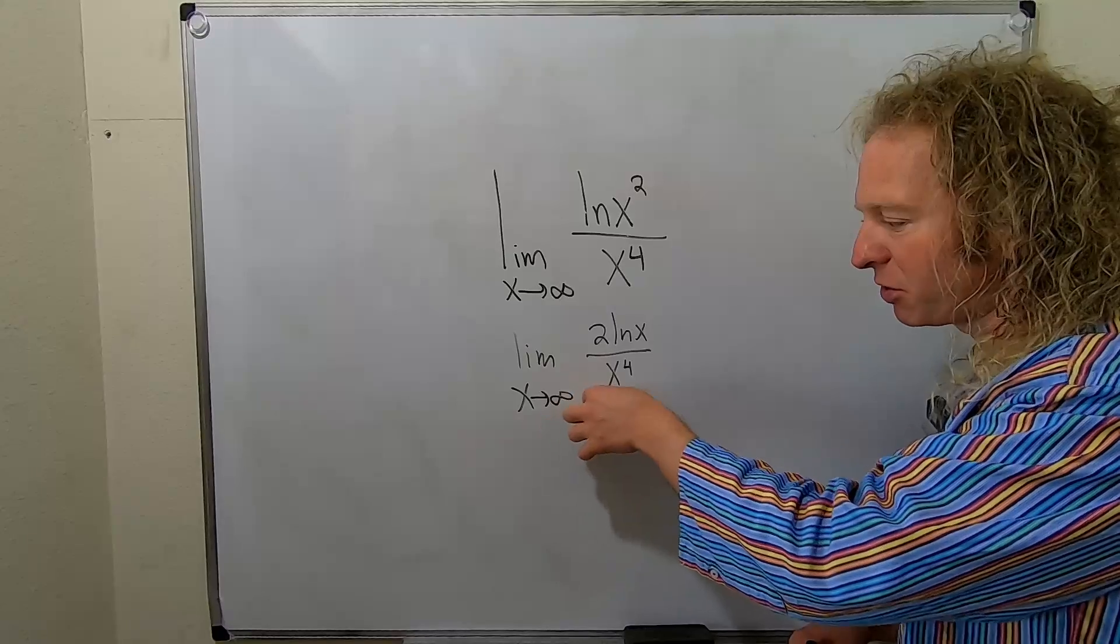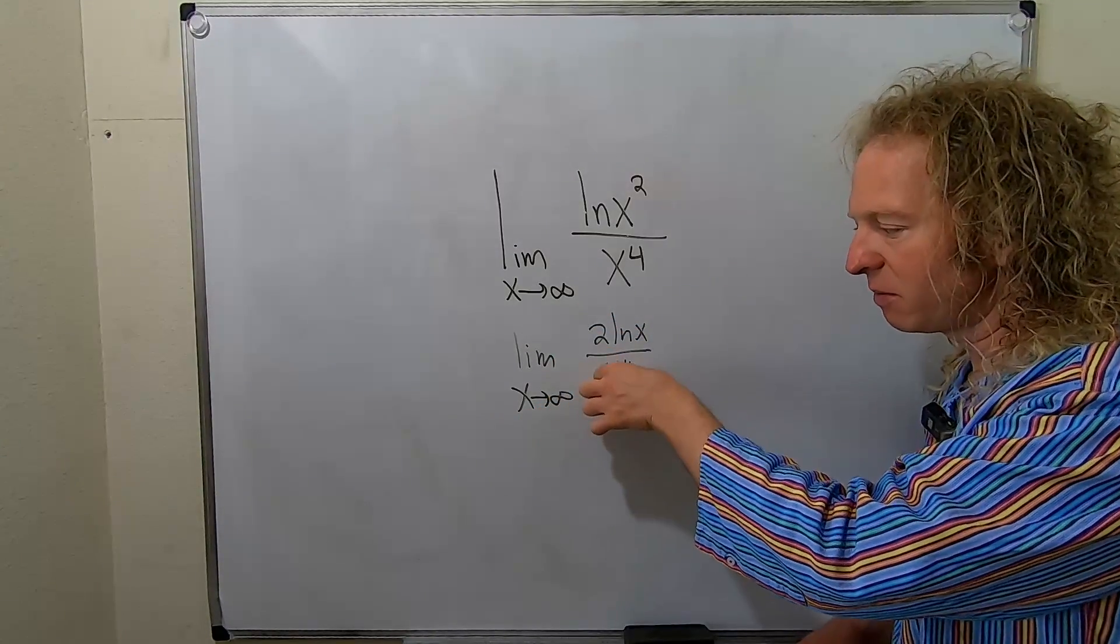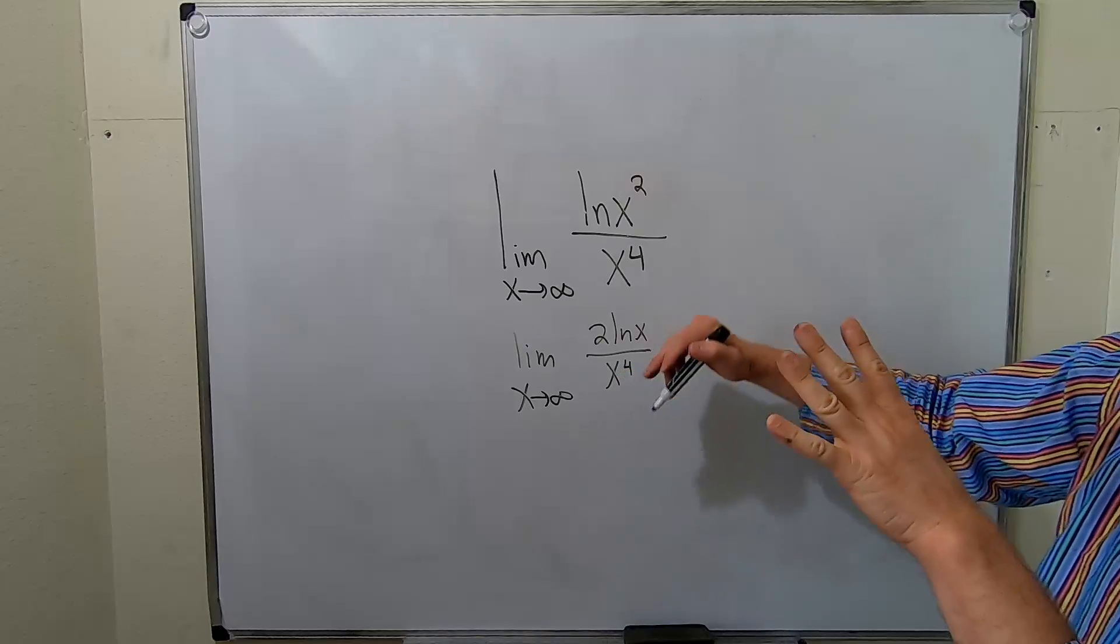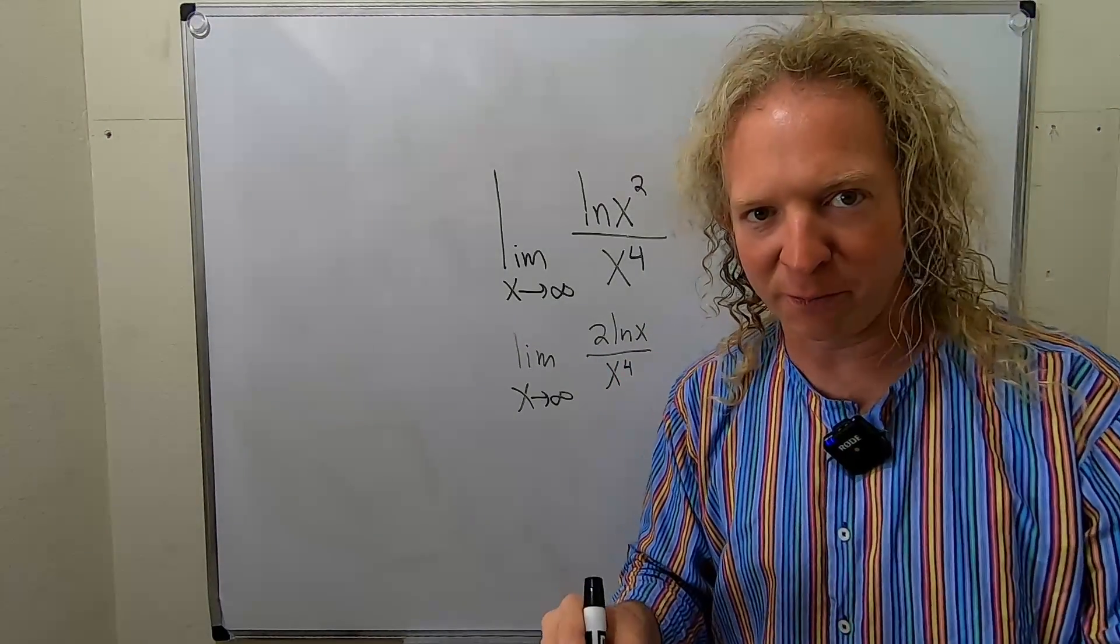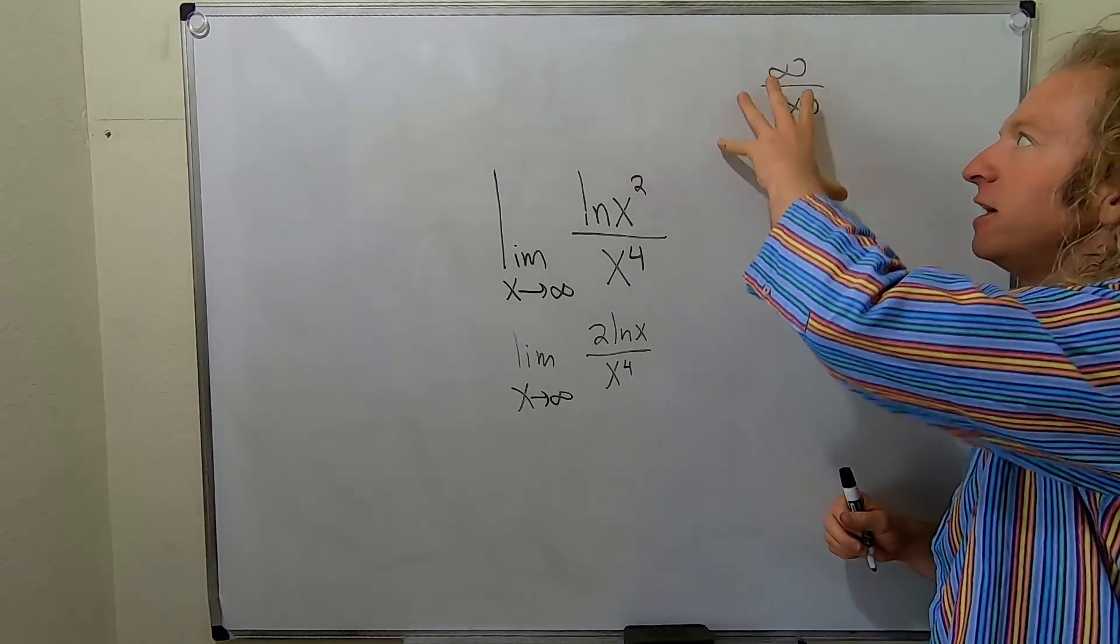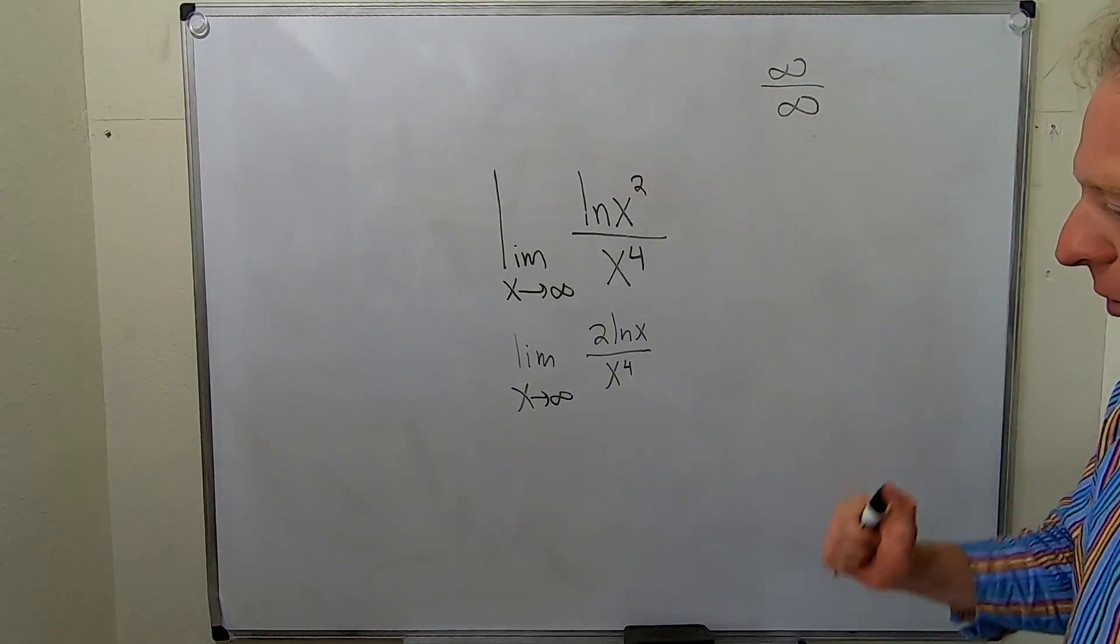The top as x approaches infinity also approaches infinity. As x approaches infinity the bottom approaches infinity. So we have infinity over infinity. This is called an indeterminate form.